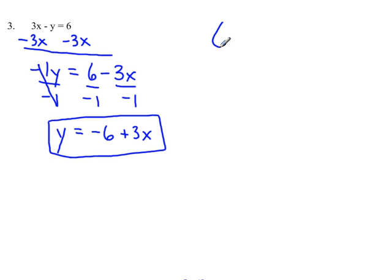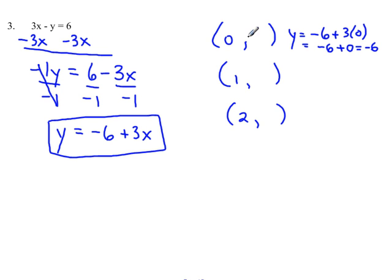What we want to do now is substitute those values of 0, 1, and 2 for the x, and come up with the corresponding y value. So the first one, y equals negative 6 plus 3 times 0. Remember multiplication first, so that equals negative 6 plus 0, which is just negative 6. So the point 0, negative 6 is one of the solutions. Continue by substituting in x is 1. Y equals negative 6 plus 3 times 1. Do the multiplication first. Negative 6 plus 3. That gives you negative 3. So another solution is the point 1, negative 3.